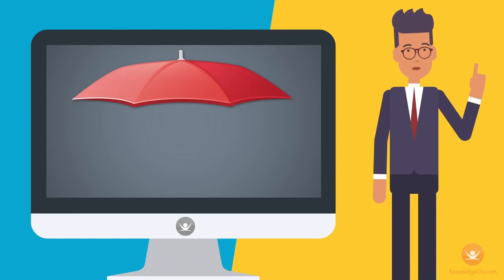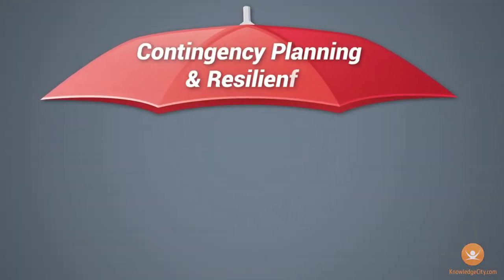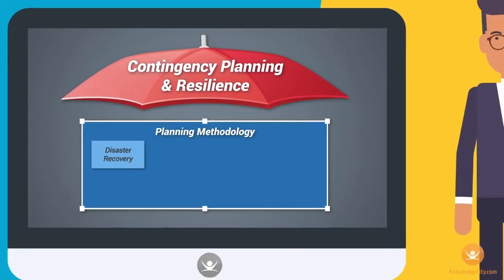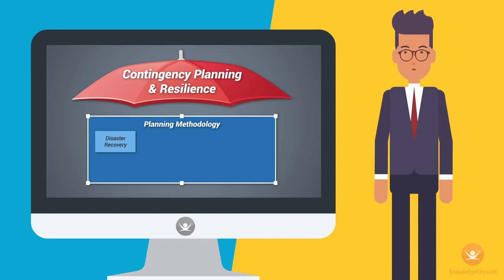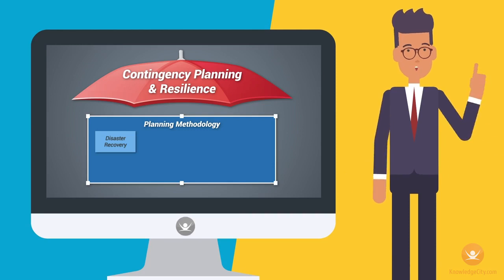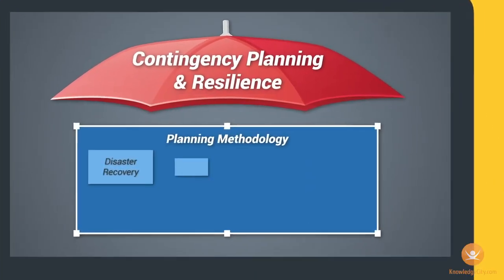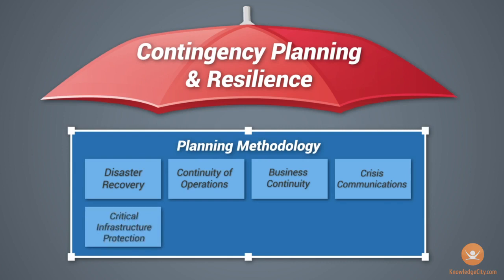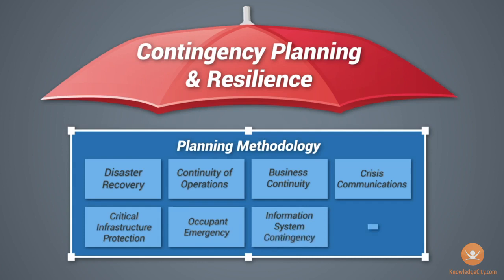Some of them, as far as contingency planning goes, you really have to think about what is meant by disaster when you're planning for a contingency and putting a contingency plan together for resiliency associated with your company's infrastructure. Because business cannot go down — what are you doing for your disaster recovery plan, for continuity of operations, for crisis communication? Do you have something in place that would allow you to communicate with your team in the event of a catastrophe? Your critical infrastructure protection is also a big piece of that puzzle. What about occupant emergency, your IS contingency as a whole, and what is your cyber incident response? The contingency planning and resilience is a big piece of the equation.